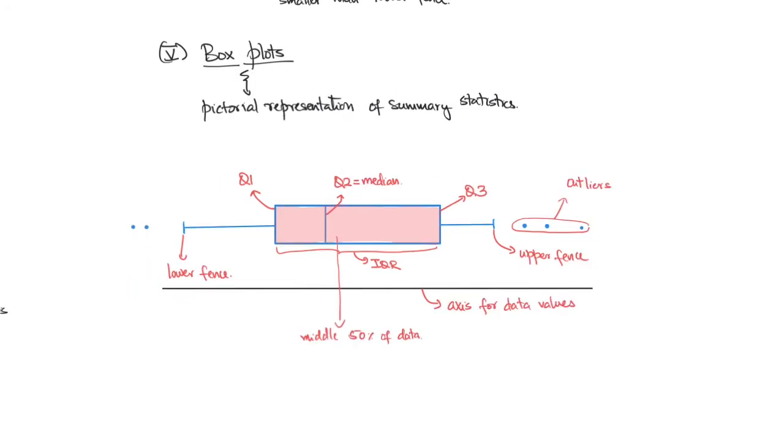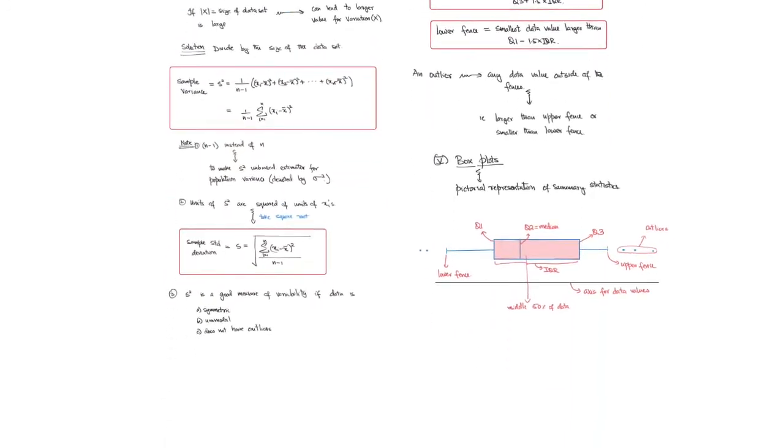So to summarize very quickly what we have done today: we've spoken about the standard deviation as a measure of variability for the sample mean, the interquartile range as a measure of variability for the sample median. We then spoke about summary statistics, outliers, and combining all of this information into a pictorial visualization, which we called the box plot. This is all for now. Thanks for watching. Take care of yourselves, and I will see you around.